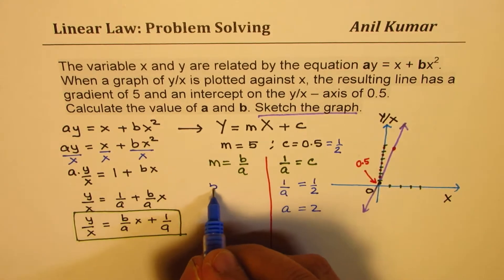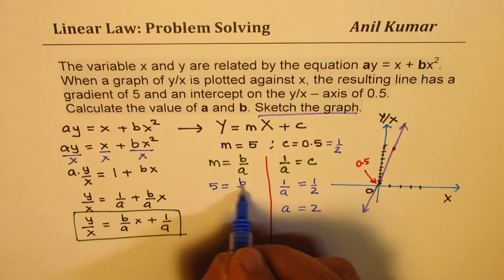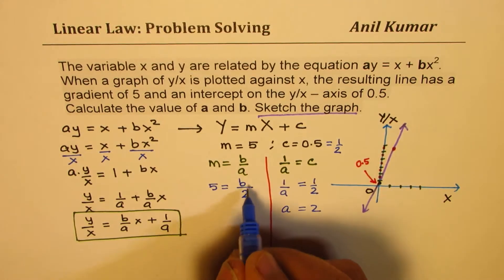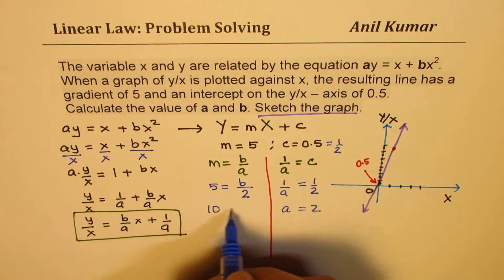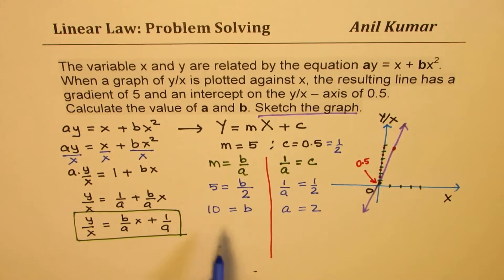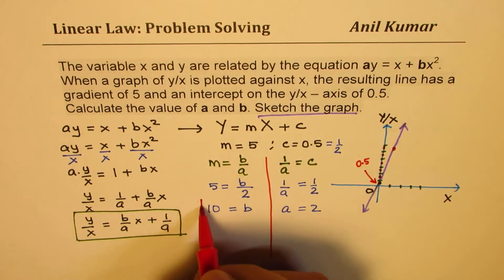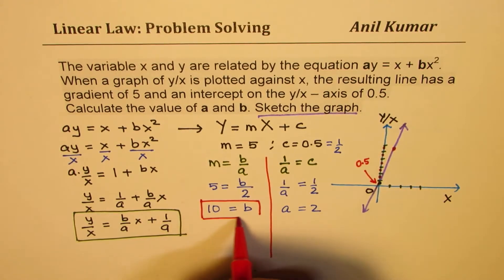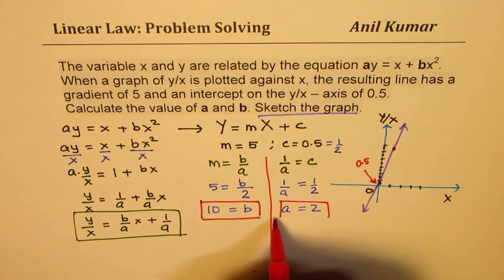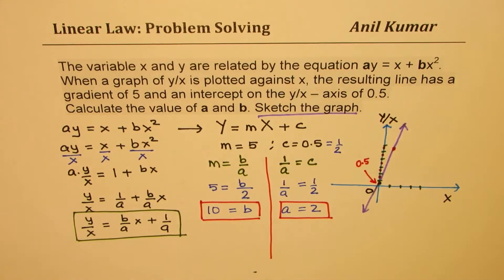m is 5. So we can write 5 equals to b/a, which is b/2. So 2 times 5 is 10 equals b. So we get both the values, a and b.